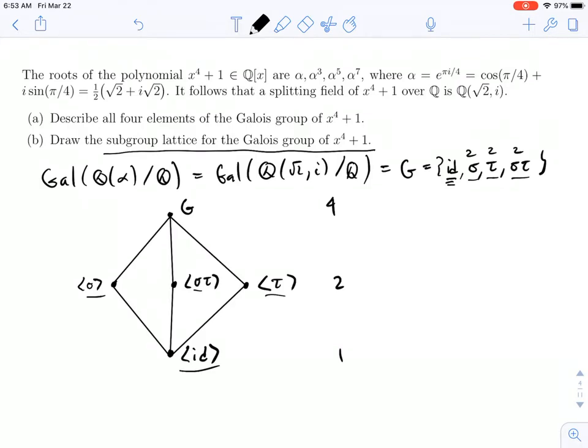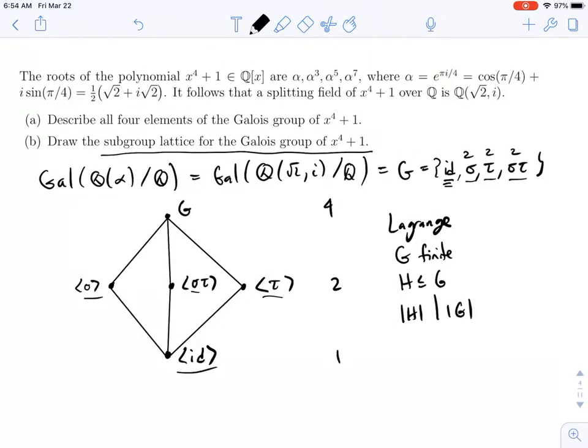And we can't have that by Lagrange's theorem. Recall that Lagrange's theorem says: if you have a finite group, so you have subgroup G which is finite, and you have a subgroup H of G, then the order of H has to divide the order of G. So since G has order 4, and 3 does not divide 4, there is no subgroup of order 3. So this must be the complete subgroup lattice.